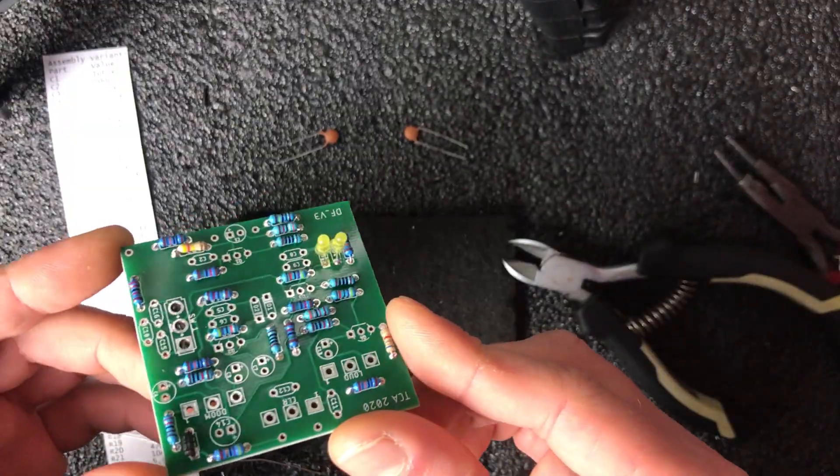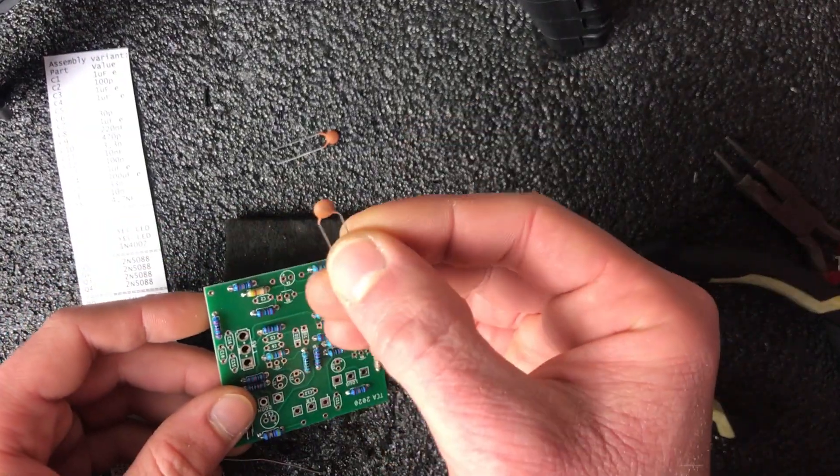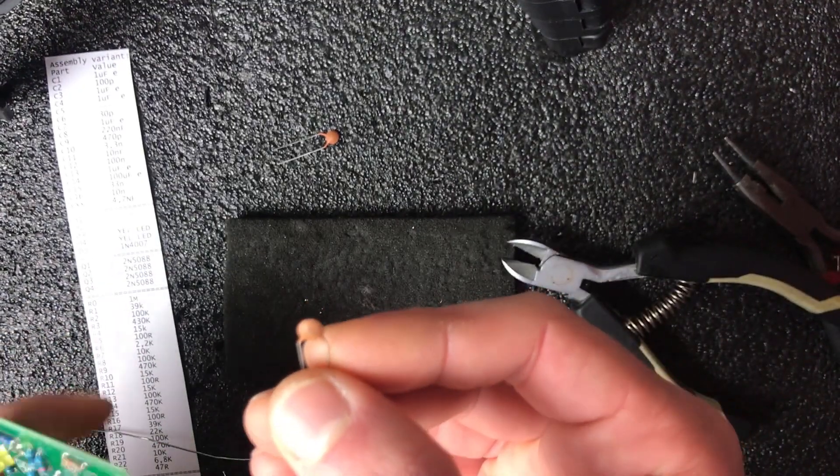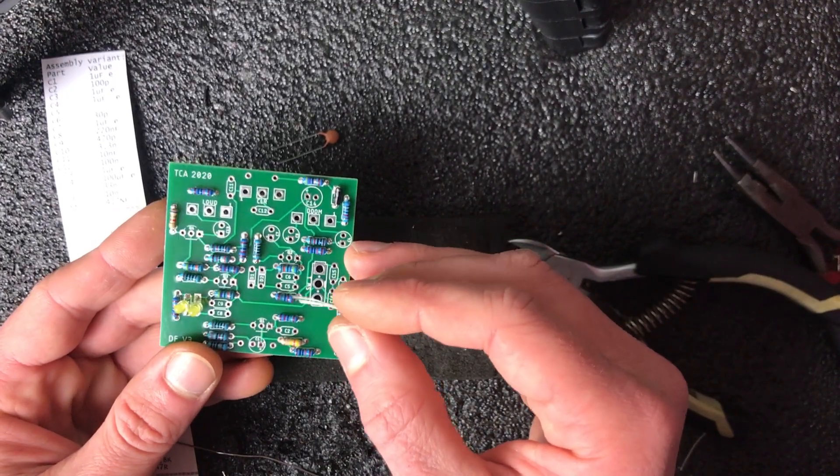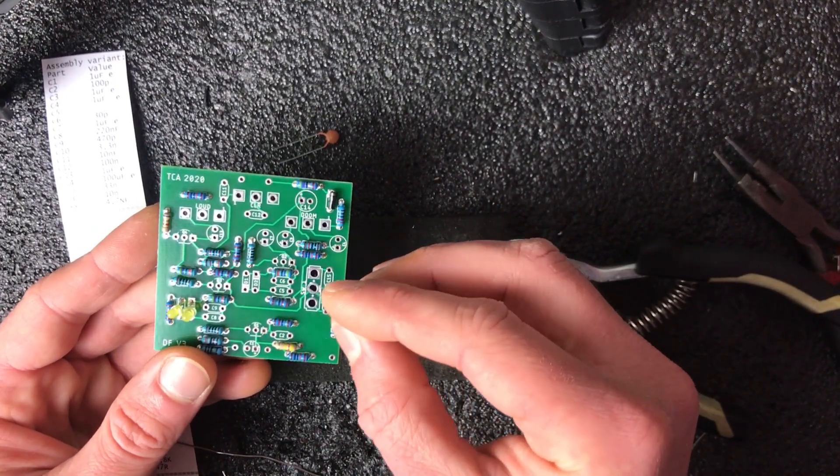For example like jacks. As you see I already soldered all resistors and diodes. So they are marked on a bill with D. The PCB is marked for silicon diodes but actually I used LEDs here.